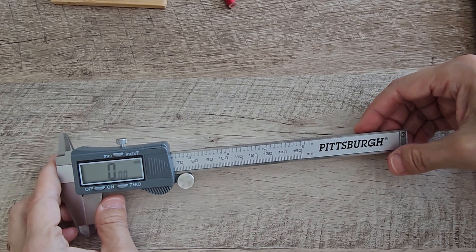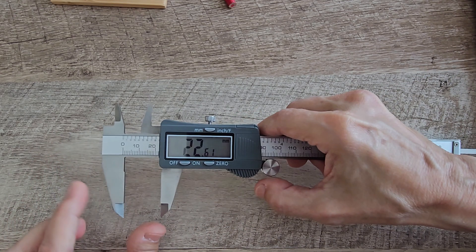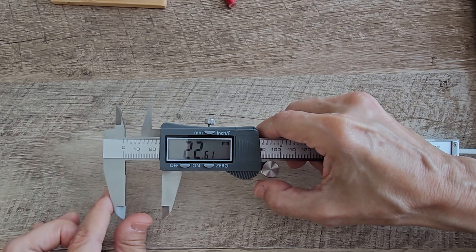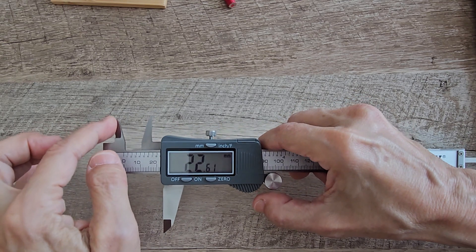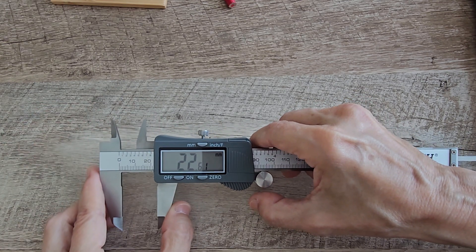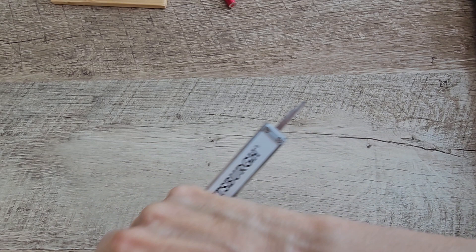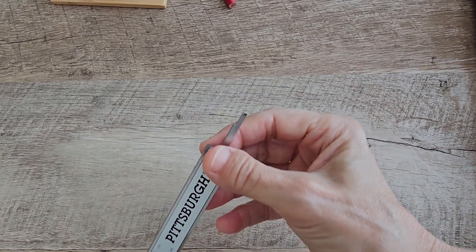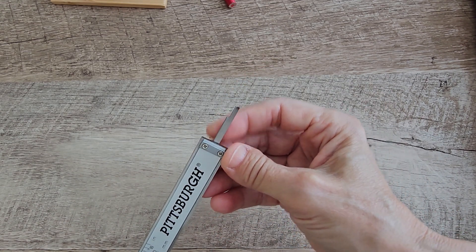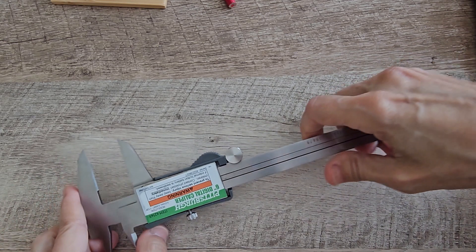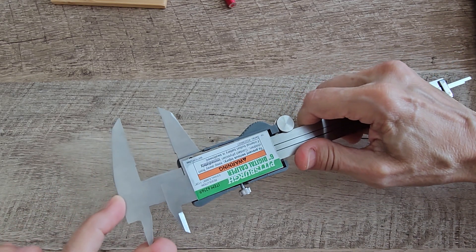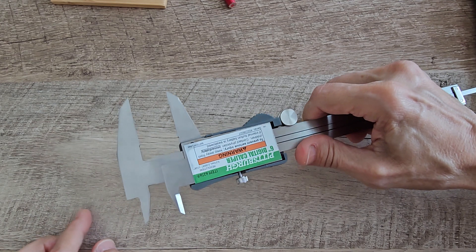There are four measurement points. In front, the big claw portion measures the outside of items. In the back, these points here measure the inside of an item. This thing that comes out here is the depth measurement. And on the back, from the edge here to this edge here, is the step measurement.